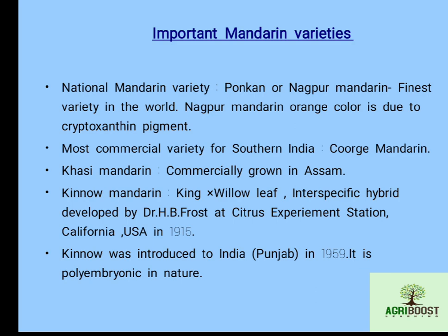Kasi mandarin is commercially grown in the Assam region. Kino mandarin is an important interspecific hybrid — a cross between King (Citrus nobilis) and willow leaf (Citrus deliciosa). It was developed by Dr. H.B. Frost at the Citrus Experiment Station, California, USA in 1915. Kino was introduced to India in 1959 in Punjab. It is polyembryonic in nature.